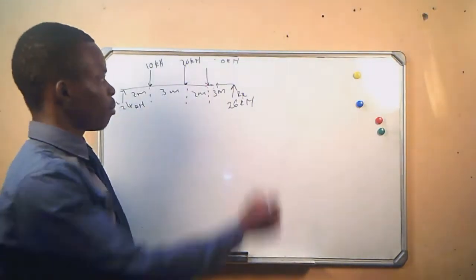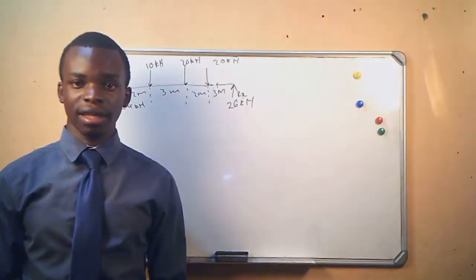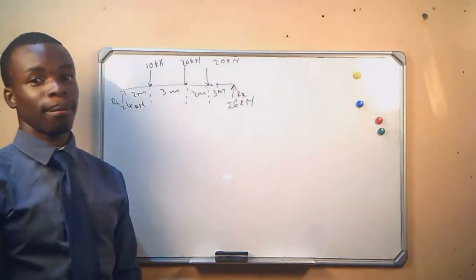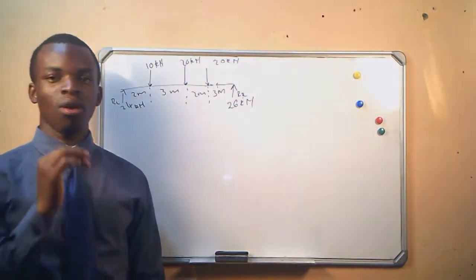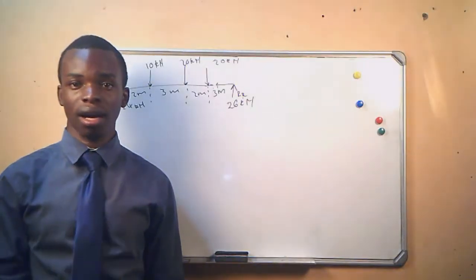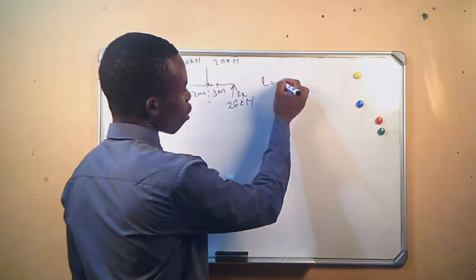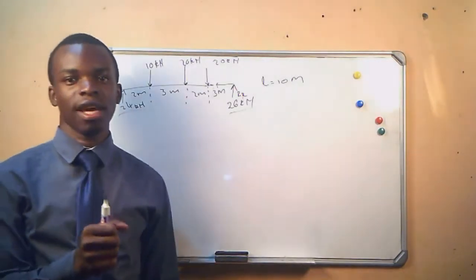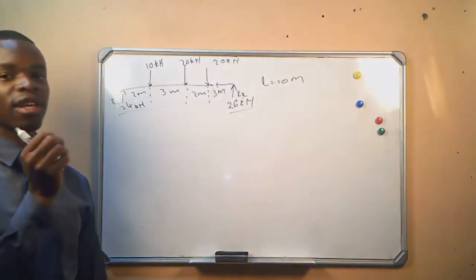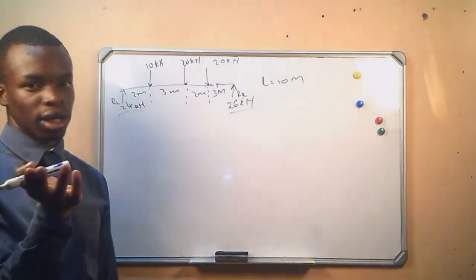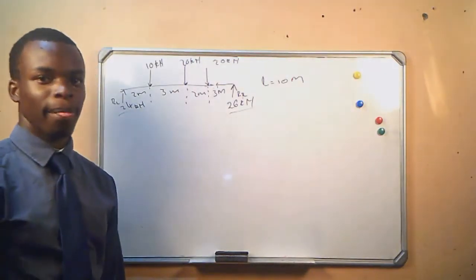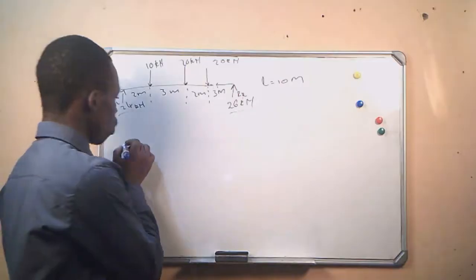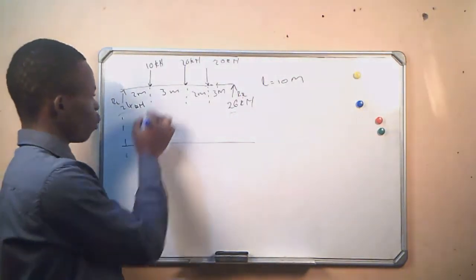We are already familiar with beams. As far as beams are concerned, we know how to calculate for reactions and we know how to draw the shear diagram. Nothing is changing — we are only adding what we call the bending moment diagram. This is a beam of length 10 meters. The reactions have already been calculated. The question asks us to calculate for the reactions, draw the shear diagram, and draw the bending moment diagram, which is what we will focus on in this section.